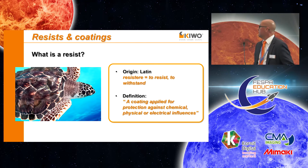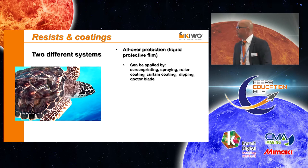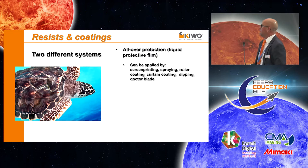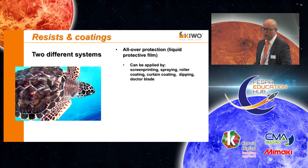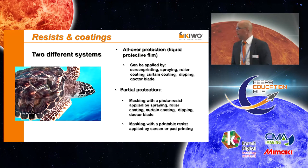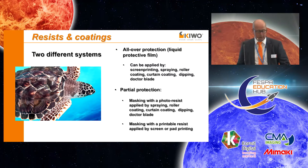We can distinguish between two different systems. The first one is an all-over protection — we also call it a liquid protective film. It can be applied by screen printing, spraying, roller coating, or other application methods. The second one is a partial protection. For partial protection, we have to create a mask, which can be done with a photoresist, or applied as a printable resist by screen printing or pad printing.